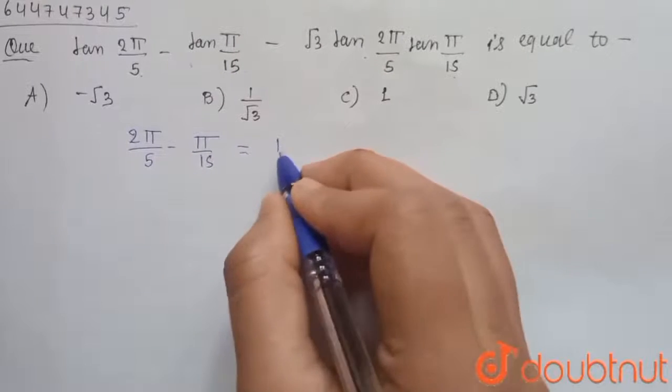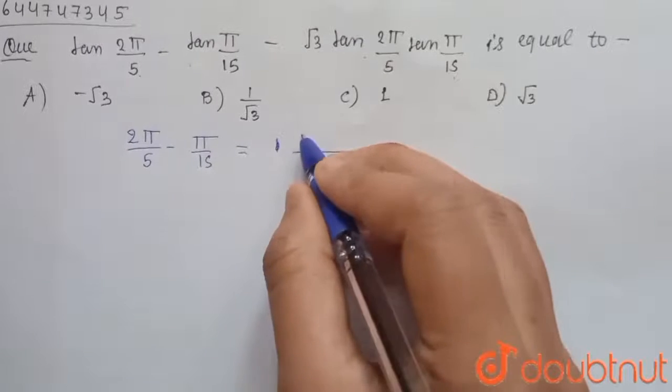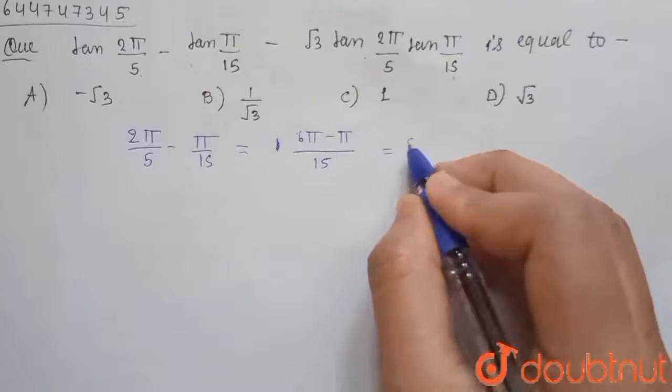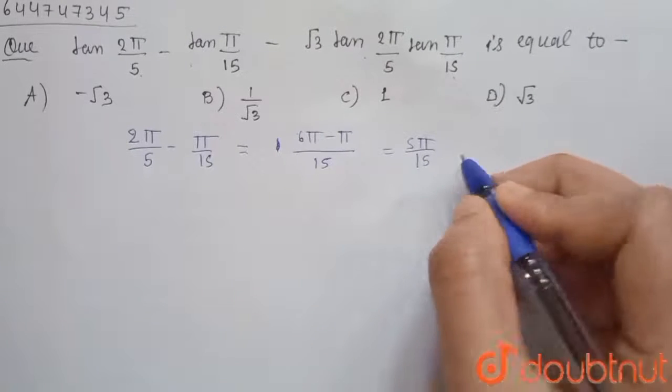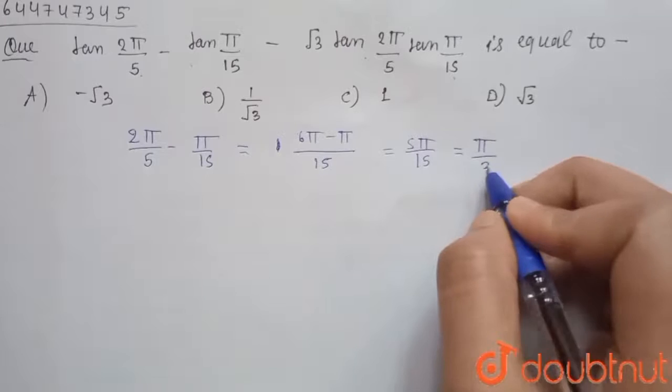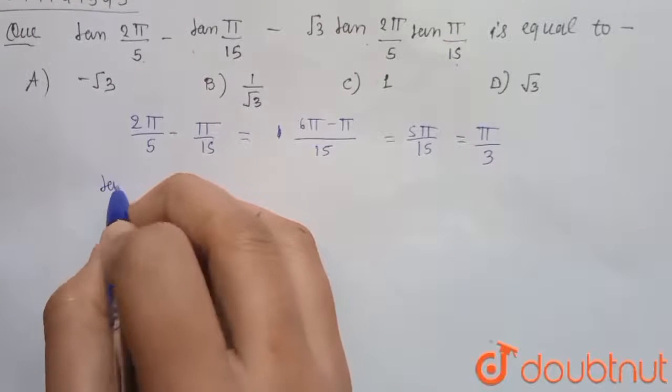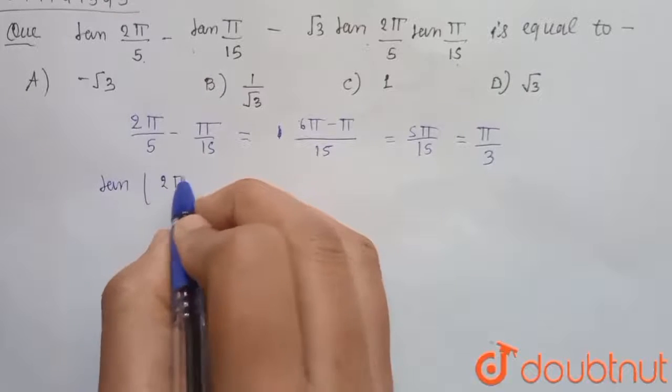to, when we take LCM, we get 15 here. 6π minus π equals 5π by 15, so we get π by 3. Now we know that when we take tan on both sides, we get tan(2π by 5 minus π by 15) equals tan π by 3. Now we know the formula